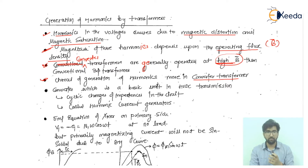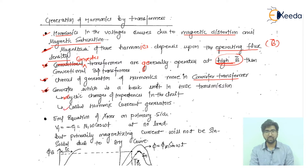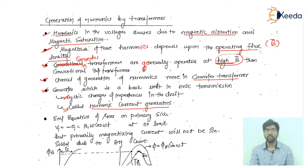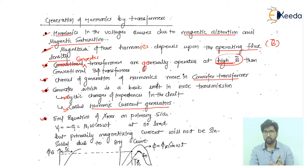The converter, which is a basic unit in HVDC transmission, causes cyclic changes in the impedance of the circuit. These cyclic changes are why converters are called harmonic current generators.